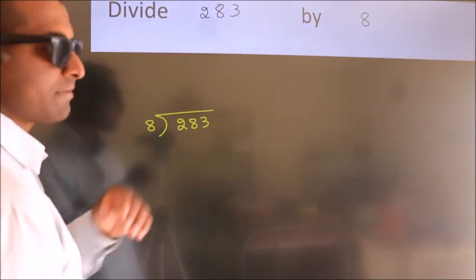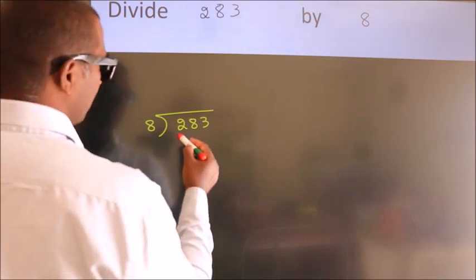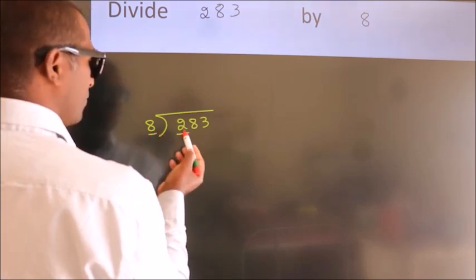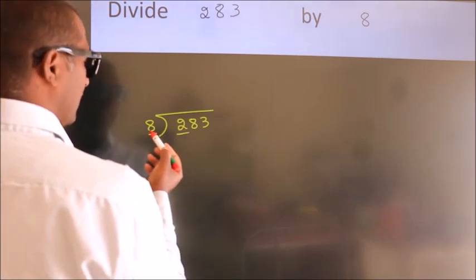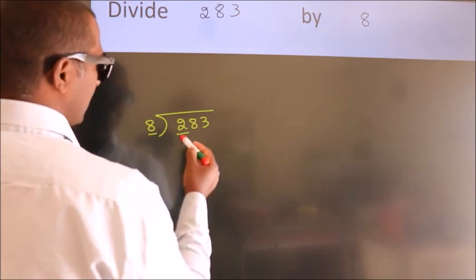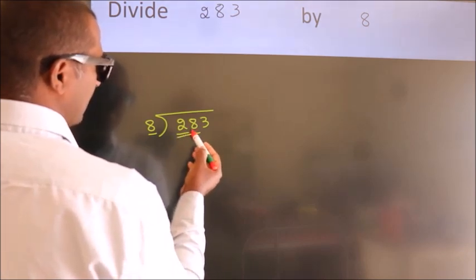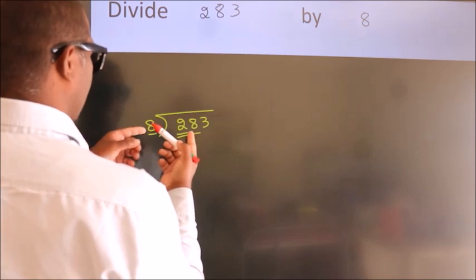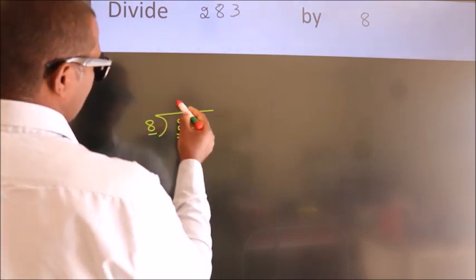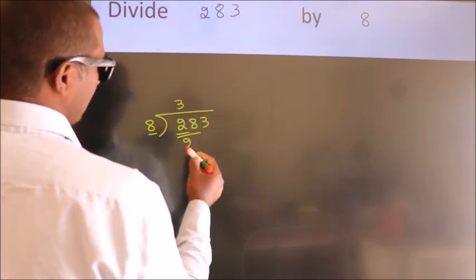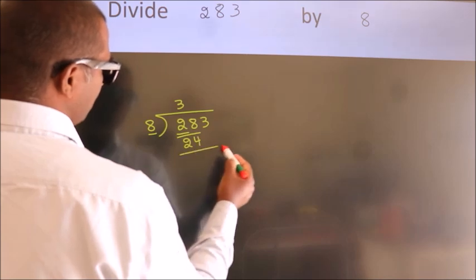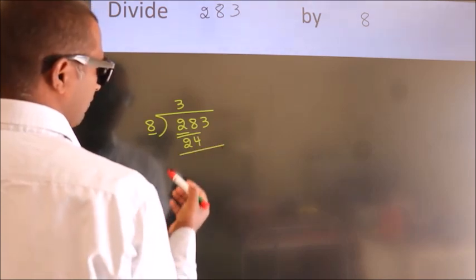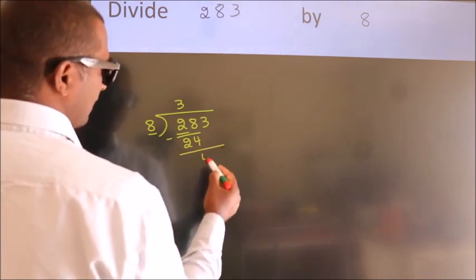Next, here we have 2, here 8. 2 is smaller than 8, so we should take 2 numbers: 28. A number close to 28 in 8 table is 8 threes, 24. Now we should subtract. We get 4.